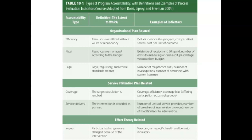Two types of accountability are related to the service utilization plan: coverage and service delivery accountability. Coverage relates to the program reaching the intended participants, and service delivery relates to the intervention being provided as planned. Lastly, impact accountability relates to the effect theory and is concerned with the program having intended outcomes on the intended audience.